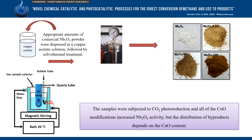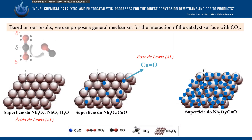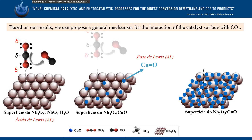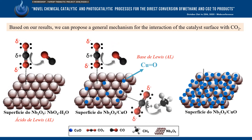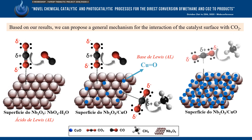The samples were subjected to CO2 photoreduction, and all of the copper oxide modifications increased niobium pentoxide activity, but the distribution of by-products depends on the copper oxide content. Based on our results, we can propose a general mechanism for the interaction of the catalyst surface with CO2.